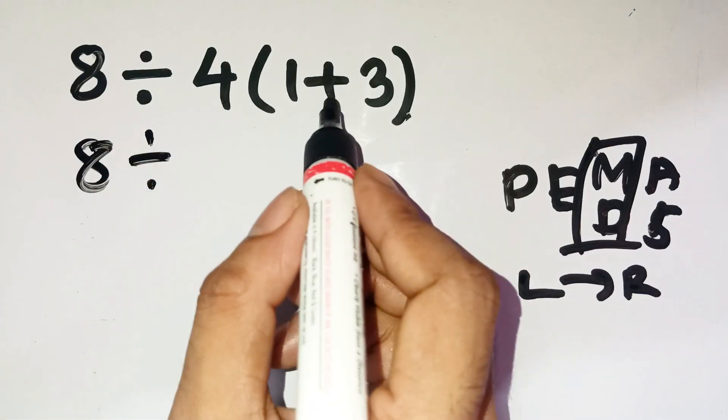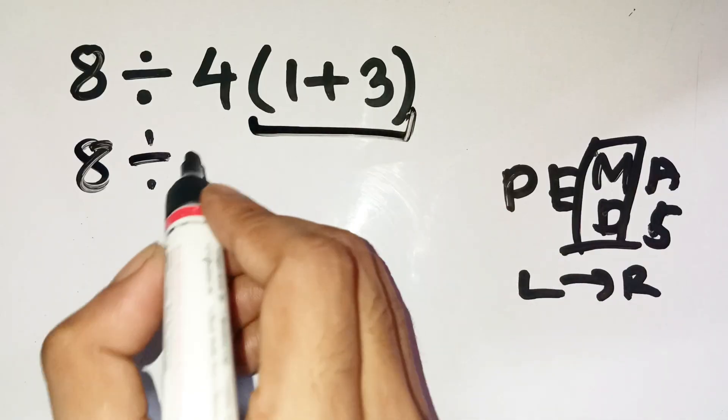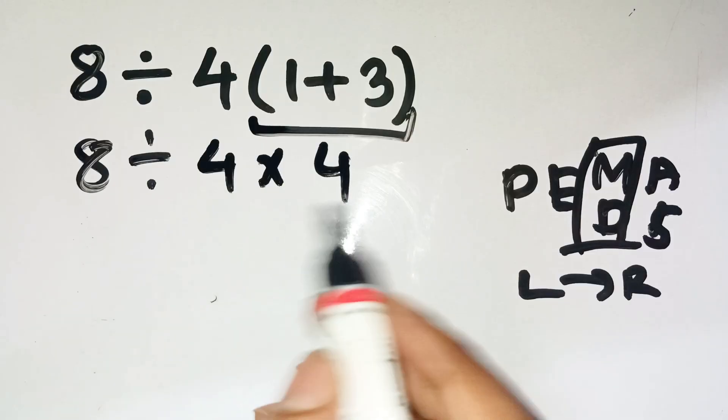First, we solve what's inside the parentheses. 1 plus 3 equals 4. Now the expression becomes 8 divided by 4 multiplied by 4. No brackets left. So we go left to right.